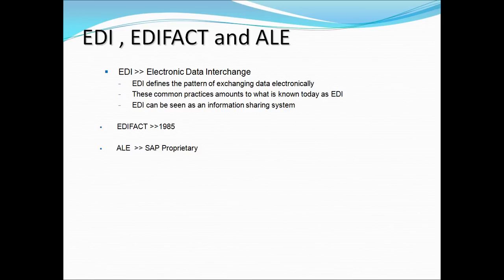The basic difference between ANSI and EDIFACT is that in ANSI, documents are identified with numbers — for example, 850. In EDIFACT, documents are identified by name, like 'orders.' So in EDIFACT we call it 'orders,' while in ANSI the same is called with a number like 850.